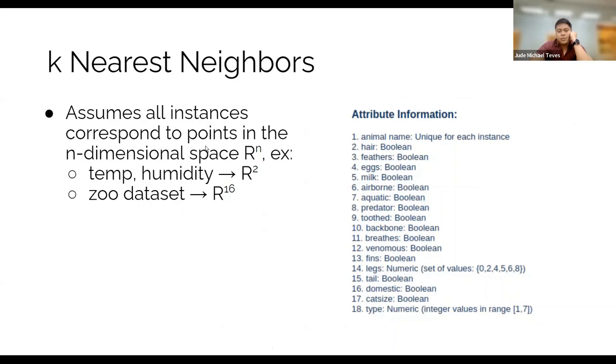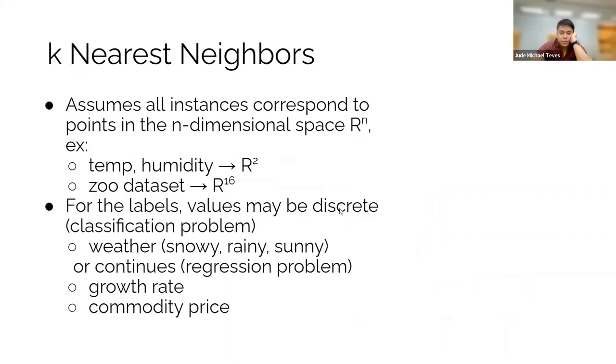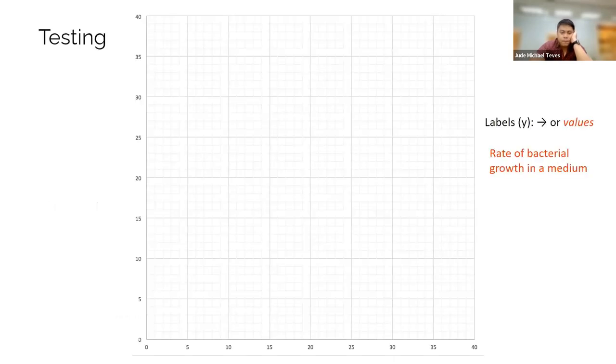So k nearest neighbors. It seems all instances and scores data points in the n-dimensional space. Here it is. Just an example. You have an input dataset like this. Zoo dataset having 16 dimensions. It could be any other dataset. You're not limited to two dimensions. Could be 16, could be 100, could be 1,000 dimensions. Yeah, where the labels, values may be discrete, classification problem. Could also be numerical, but that's something predated.